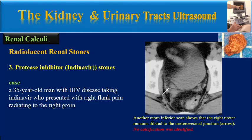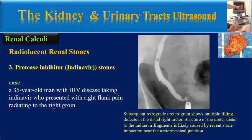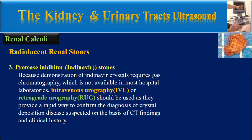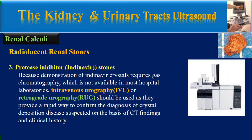Other more inferior scans show that the right ureter remains dilated to the retrovesical junction, but no calcification was identified. A subsequent retrograde ureterogram shows multiple filling defects in the distal ureter, and stricture of the ureter distal to the indinavir fragment is likely caused by recent stone impaction near the retrovesical junction. Because demonstration of indinavir crystals requires gas chromatography which is not available in most hospital laboratories, intravenous or retrograde ureterography should be used to confirm the diagnosis of crystal deposition disease.